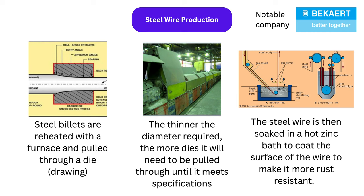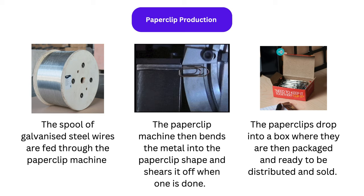Steel rusts when exposed to air and moisture, so to improve durability most steel wires are galvanized. Galvanizing means coating the wire with a layer of zinc to make it more rust-resistant. The wire is passed through a hot zinc bath and then wound up into a spool, which is then shipped to the customer. And now finally we come to paperclip production: spools of galvanized steel wire are shipped to a paperclip factory.